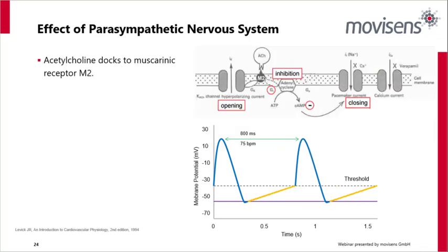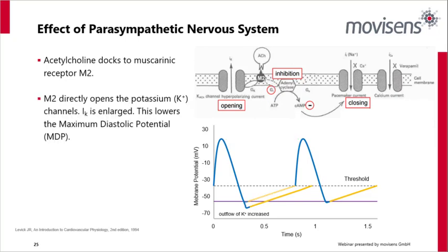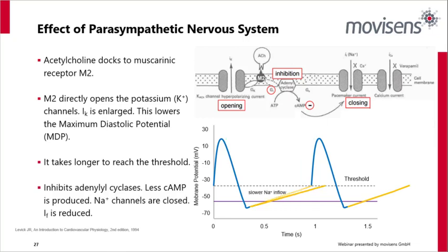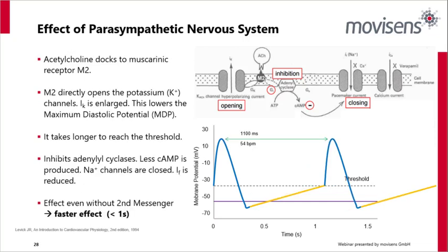For the parasympathetic nervous system: acetylcholine docks to the muscarinic receptor M2, which directly opens the potassium channels. The IK current is enlarged, lowering the maximum diastolic potential, and it takes longer to reach the threshold. It also inhibits adenylyl cyclases — less cyclic adenosine monophosphate is produced, sodium channels are closed, and IF is reduced. Whilst a second messenger is involved, this effect actually occurs without its influence, so the effect is substantially quicker — less than one second. The braking mechanism acts far more efficiently and powerfully than the gas pedal.